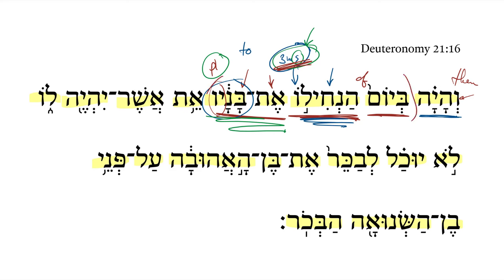All of this creates a temporal clause. 'On the day of his giving' would be something like 'on the day when he gives the inheritance' or 'assigns his sons his inheritance.' Next we get another direct object marker, further defining what this inheritance is — that which belongs or exists to him.